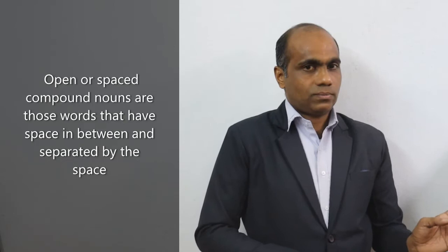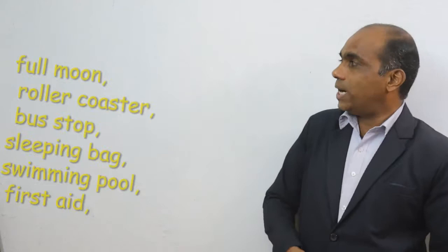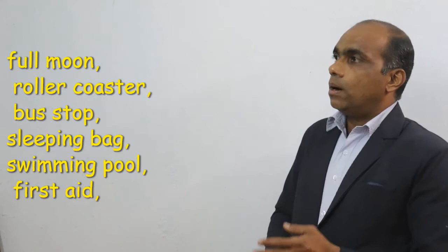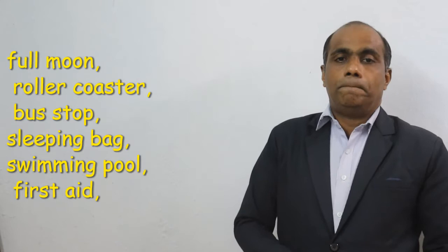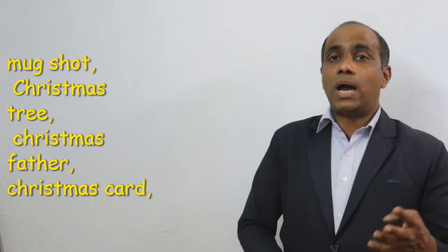So they are written separately two words together and they make one word. Examples we have here: full moon, roller-coaster, bus stop, sleeping bag, swimming pool. Here swimming pool please look at here. First aid, moon short, Christmas tree, Christmas father, Christmas card, etc. So they are all compound nouns but they are open or spaced compound nouns.